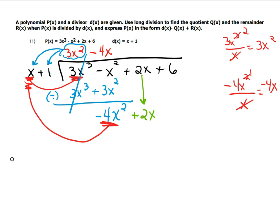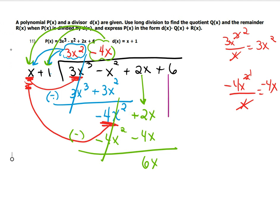And then you're going to take the negative 4x and multiply it times the x plus 1. So that's going to be negative 4x² minus 4x. Draw a line and you're supposed to subtract. Those cancel out. 2x minus a negative 4x would be 2x plus 4x. So that makes this 6x. And then we drop down the plus 6.